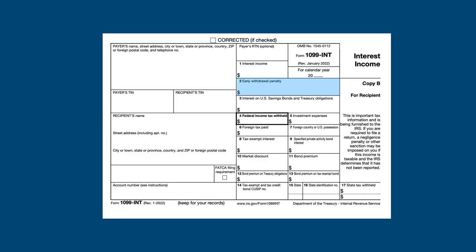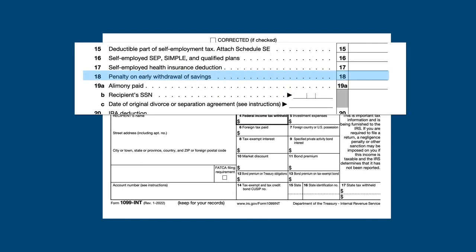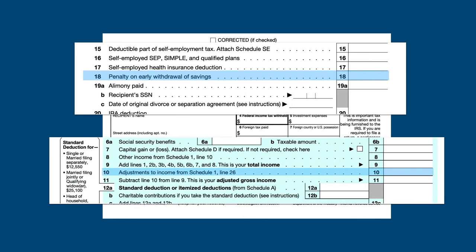Box 2 on the form has any early withdrawal penalties you may have been assessed by your financial institution if you withdrew money from a time deposit, such as a CD, before it matured. These penalties may be deducted from your gross income as an adjustment to income and are reported on line 18 of Part 2 of Schedule 1, then carried to line 10 of Form 1040.